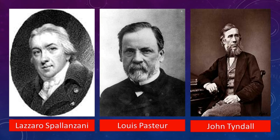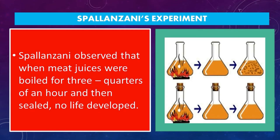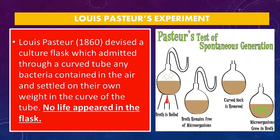About ten years later, Spallanzani was able to prove that the spontaneous generation theory was wrong. Spallanzani observed that when meat juices were boiled for three quarters of an hour and then sealed, the result was no life developed. Also, Louis Pasteur in 1860 devised a culture flask which admitted air through a curved tube; any bacteria contained in the air settled by their own weight in the curve of the tube. Again, the result — no life appeared in the flask.